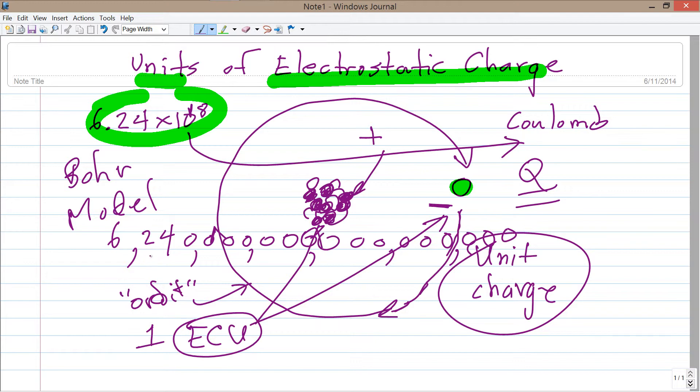Whatever the heck that is, I believe it's 6.24 quintillion. 10 to the 18th is a quintillion. A 6, a 2, a 4, and then 16 zeros. That is a coulomb. That's an awful lot, and yet if you get just one coulomb of electrical charge carriers flowing past a given point in one second...